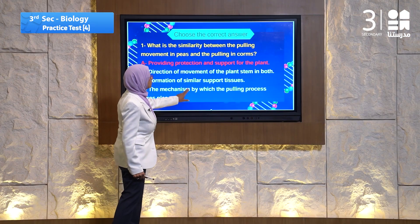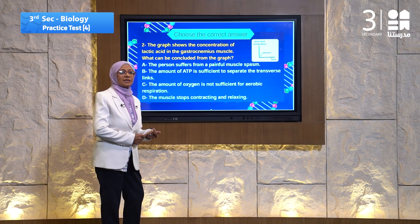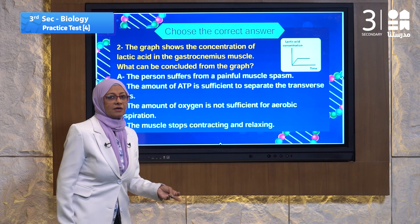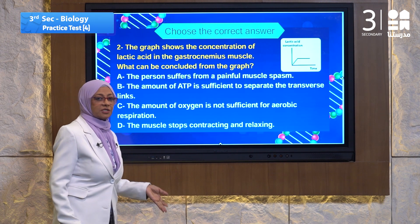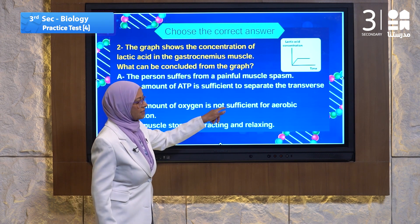Question number two has a graph. We must study the graph well before reading the question. The graph speaks about the lactic acid concentration over time. We can see the lactic acid concentration increases and then becomes stable as time passes. The question asks about the concentration of lactic acid in the gastrocnemius muscles — what can be concluded from the graph?